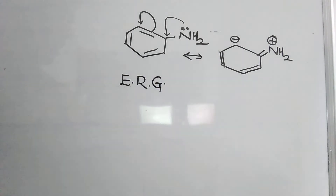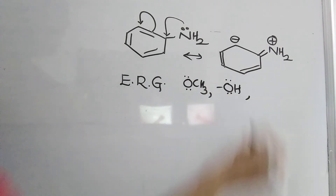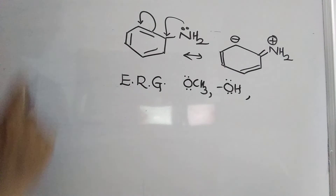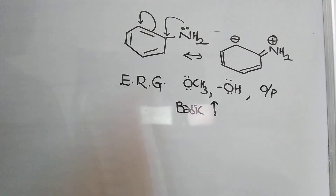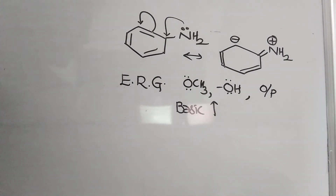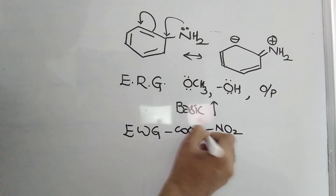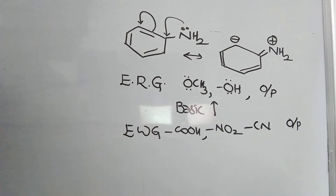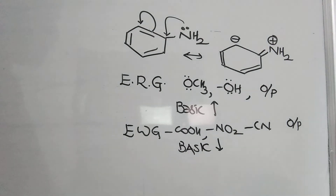Because of the +M effect, aniline is a weaker base than ammonia. However, the basic strength of aniline can be increased by electron-releasing groups like -OCH3, -OH, or methyl/ethyl groups at the ortho and para positions — these increase electron density on nitrogen. Conversely, electron-withdrawing groups like -COOH, -NO2, or -CN at ortho and para positions decrease the basic strength of aniline further.